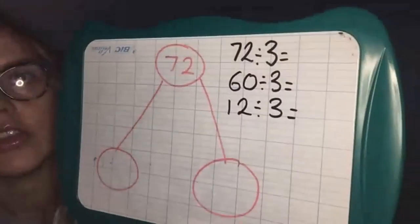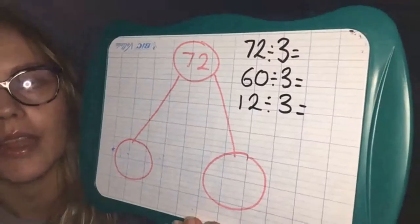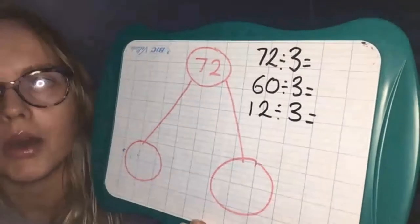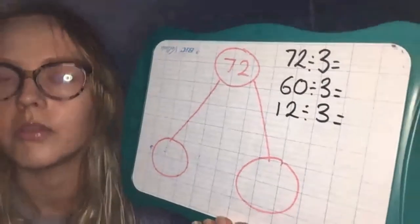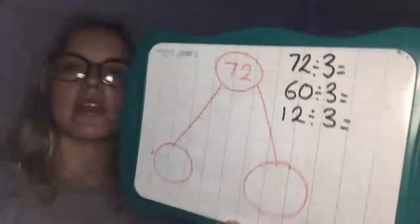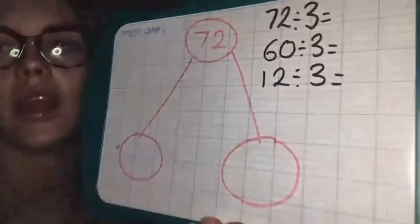Inspired actually by one of the questions on the Year Four worksheet — if you want to grab a spare piece of paper or just watch me do it and go through it with me, I've got a little two-digit division here to go through. The question is 72 divided by 3, and they've used a part-whole model, which I thought was a really fantastic way of looking at this.